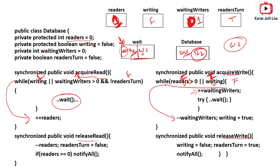After some time R2 finishes reading and calls release_read, which decrements readers and calls notify_all, giving W2 a signal.